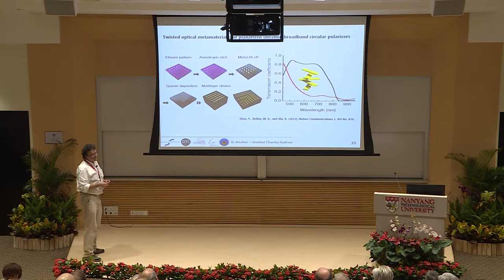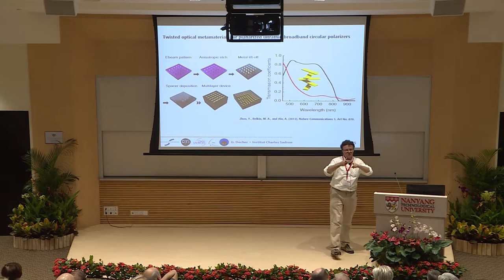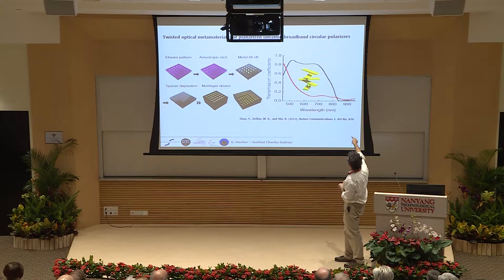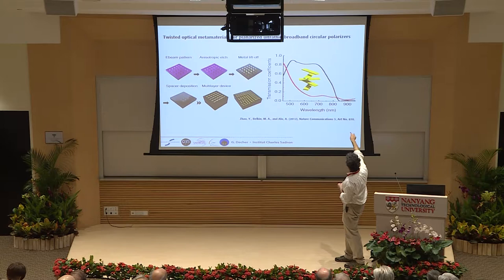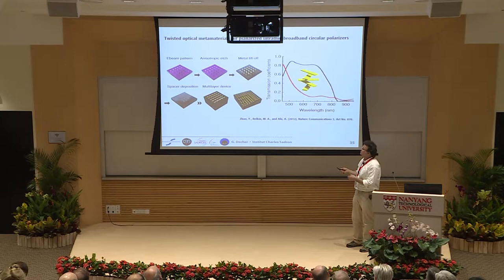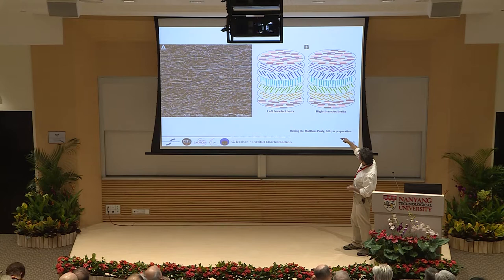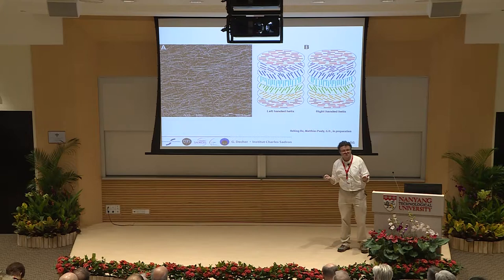For comparison, Andrea Alù in 2012 made nano-helices by nanolithography — metal objects oriented in successive layers at different angles to form a nano-helix using incredibly expensive e-beam deposition, anisotropic edge metal lift-off. It can only be done on the square micron scale, giving a certain transmission response. We can do the same thing with left-handed and right-handed helices using silver nanowires, but over the square meter.